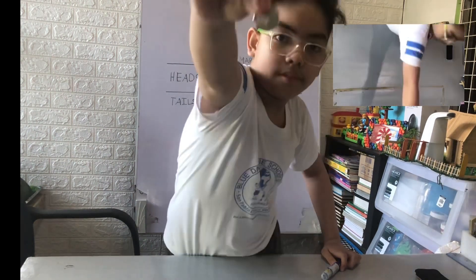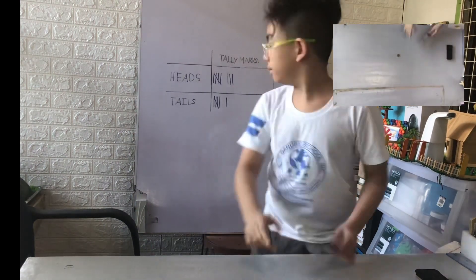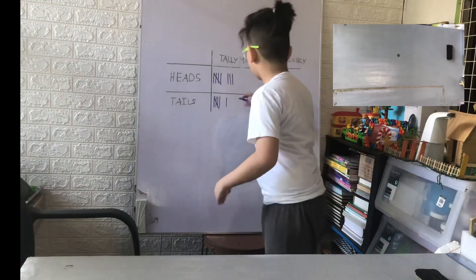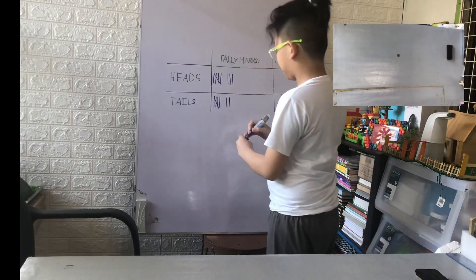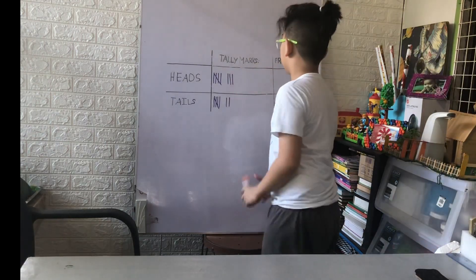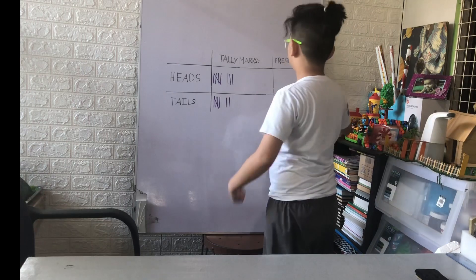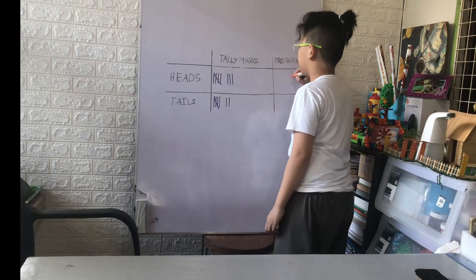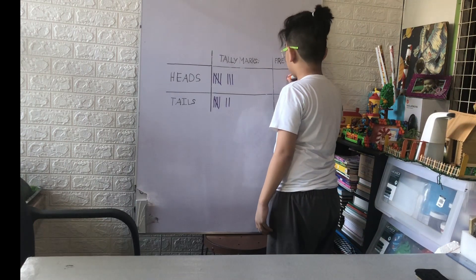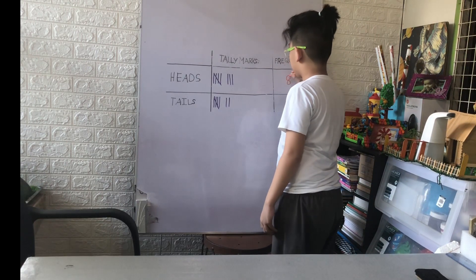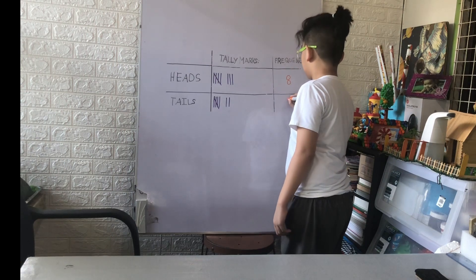The number of ways an event can happen, divided by the total number of outcomes, gives a fraction, and that's what we mean by probability.